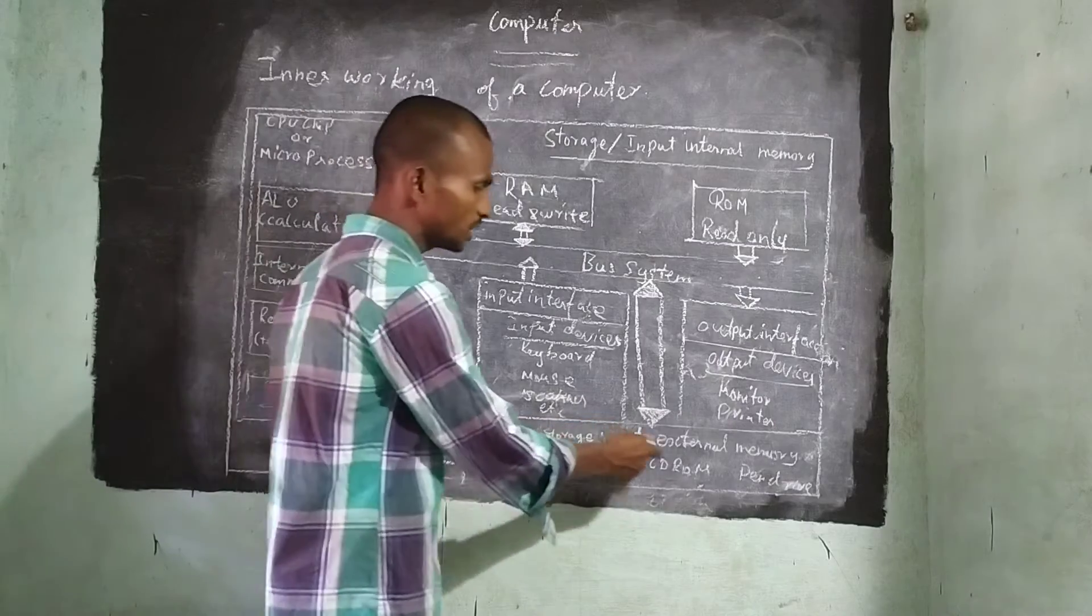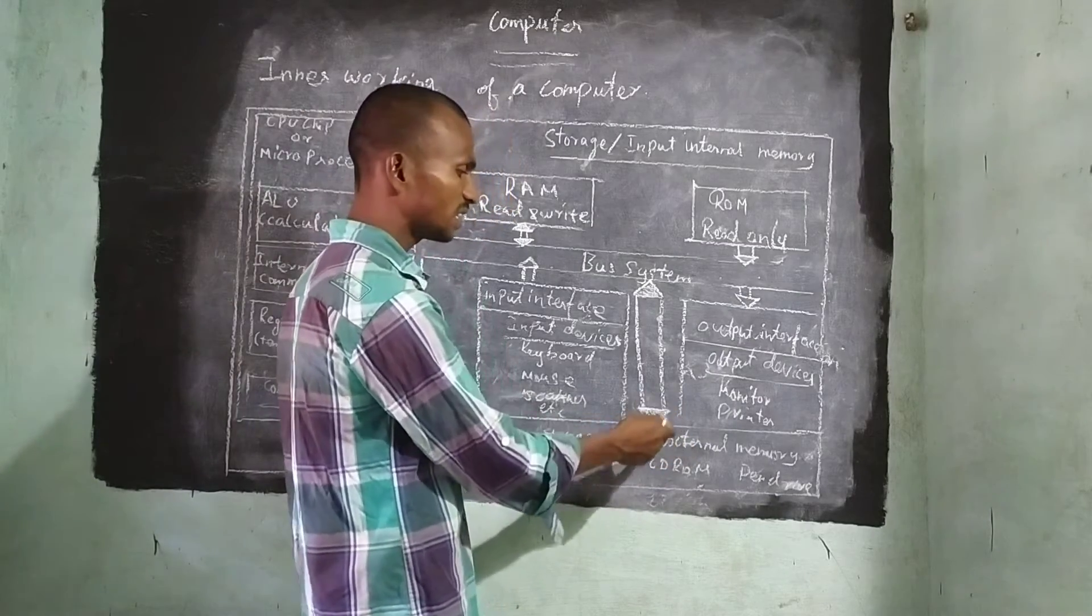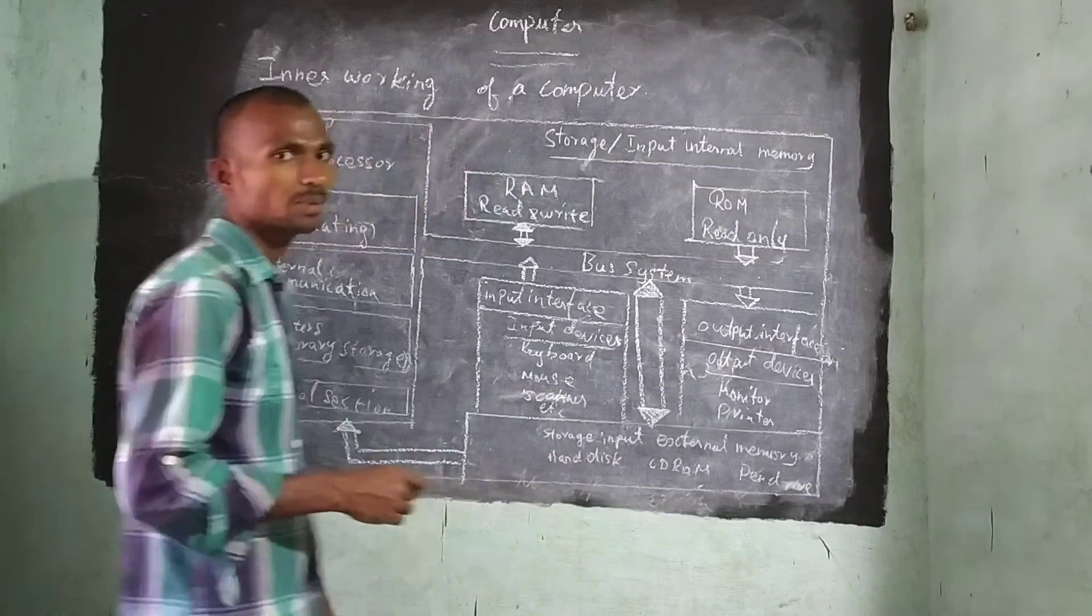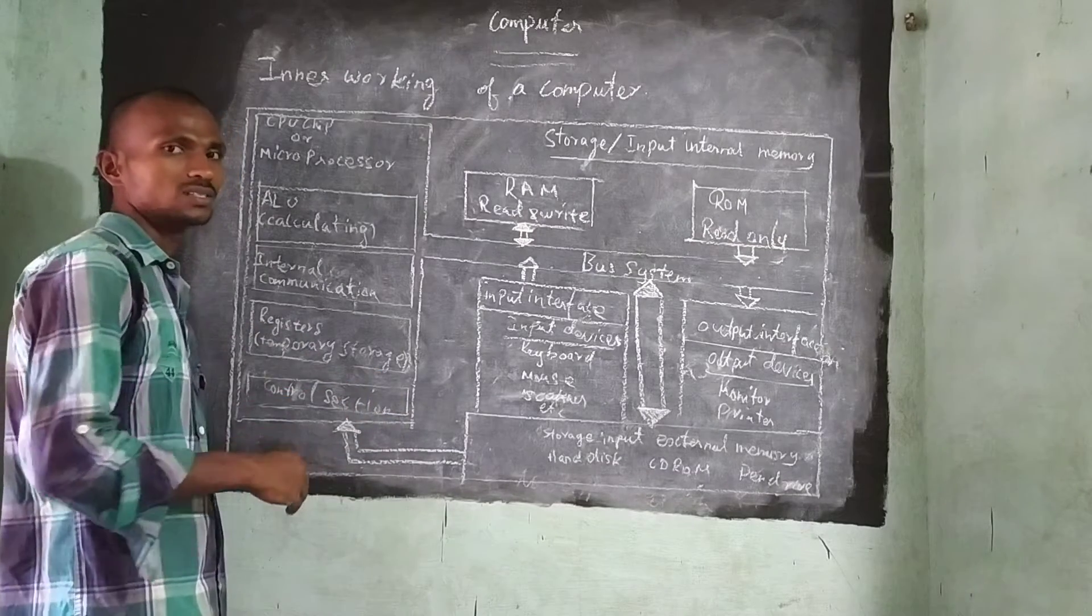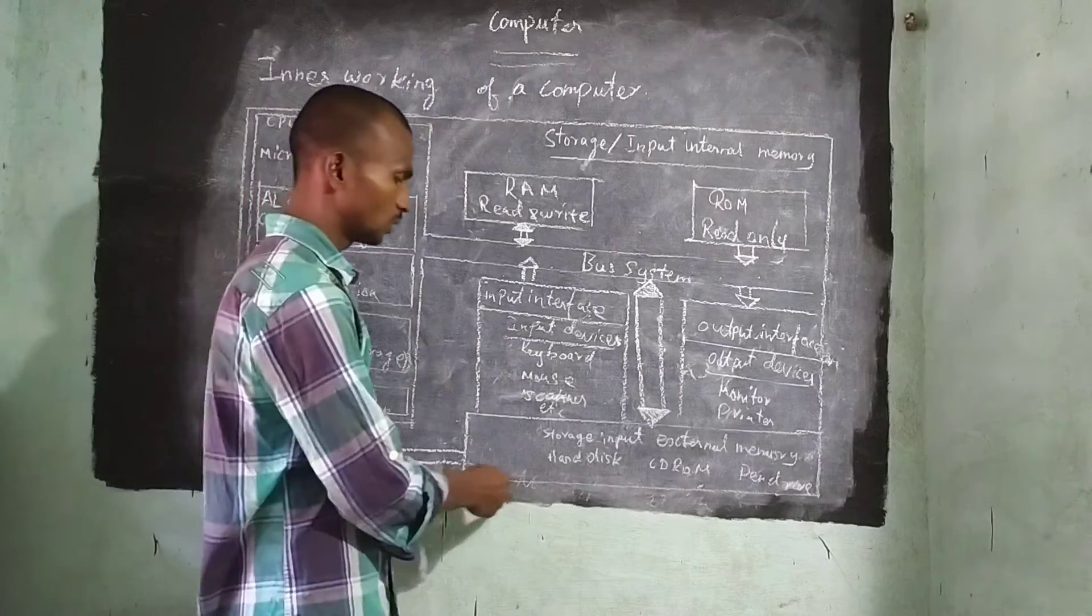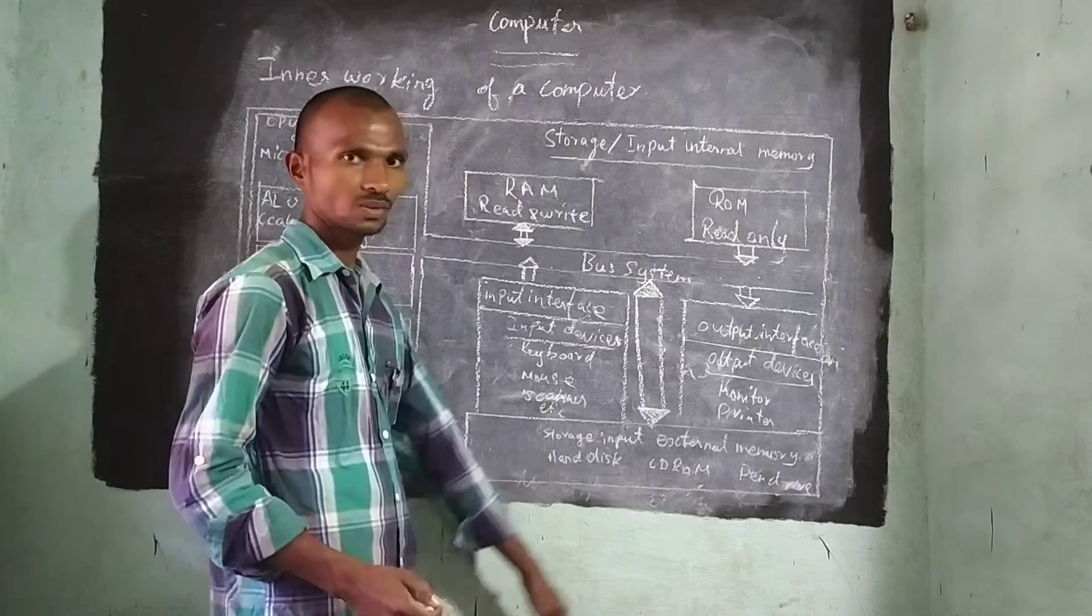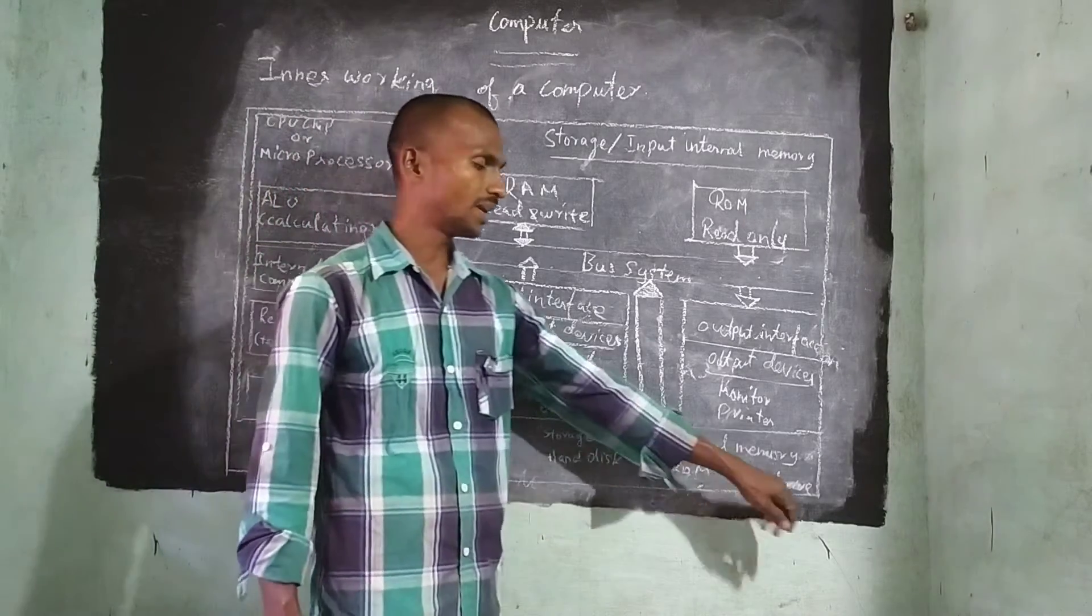Next. Storage. Input. External Memory. External memory means what? Which are the things stored externally is called as external memory. Just look. Hard disk, CD-ROM, Pen drive.